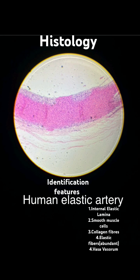Here are the histological identification features of human elastic arteries. Overall structure: thick-walled arteries with three layers — intima, media, and adventitia.